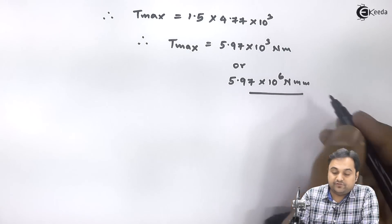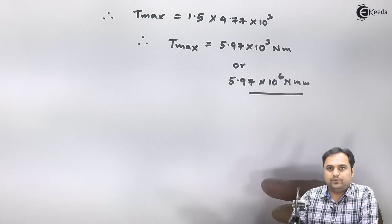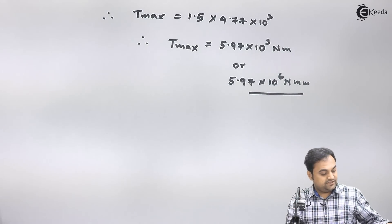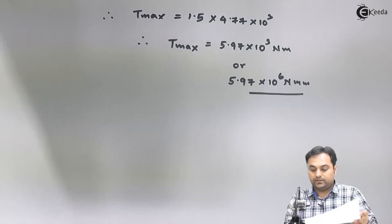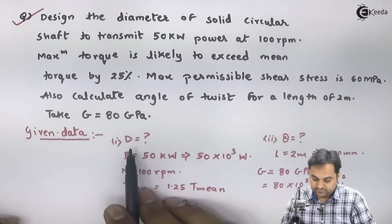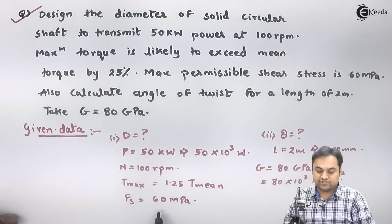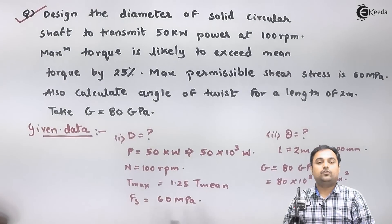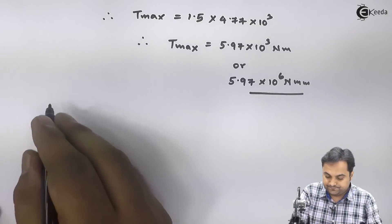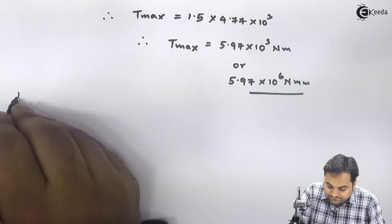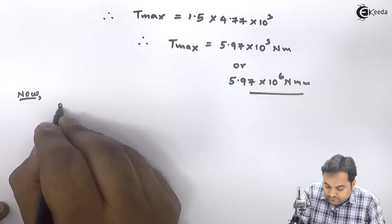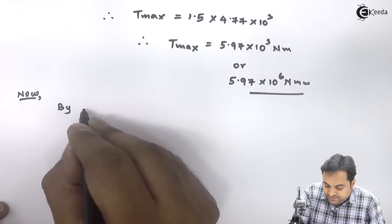Converting T_max to Newton millimeter: 5.97 into 10 raised to 6 Newton millimeter. Now, for the first part of the question we need to calculate the diameter, and shear stress is given, so I will use the strength criteria.